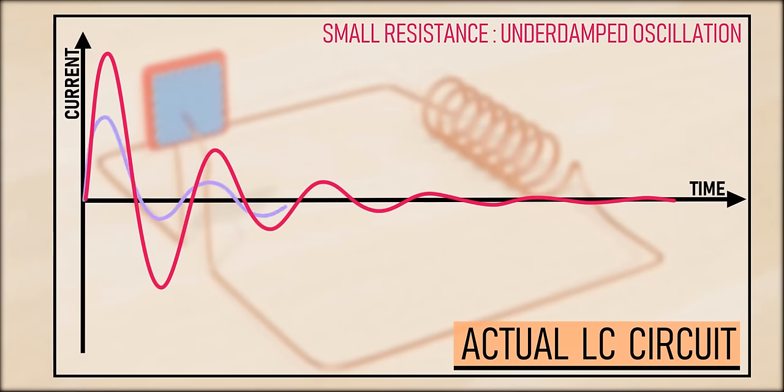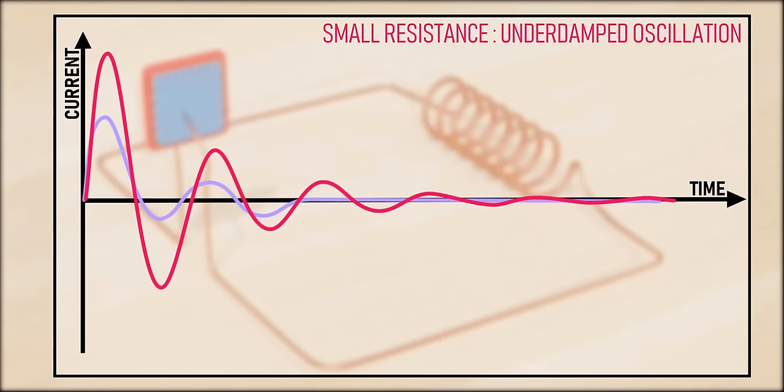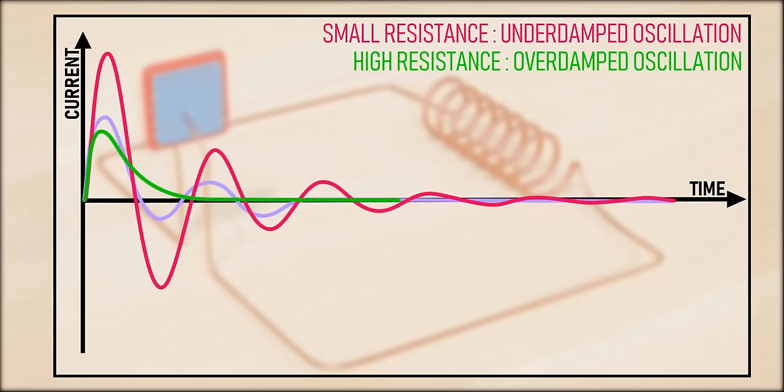As we increase the resistance, the oscillations die out very quickly, as shown. If we increase the resistance further to some critical value, there would be no oscillation at all.